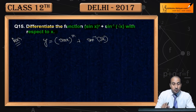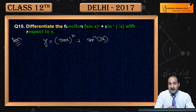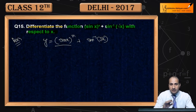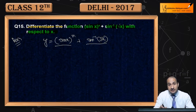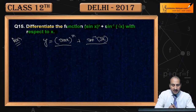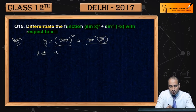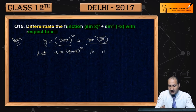Ab inhe directly nahi karna hai. Directly karenge to sin x to the power x nahi ho payega. Similarly, sin inverse root x bhi complicated hai. To do complicated functions hain — better hai, let u = sin(x)^x and v = sin⁻¹(√x).